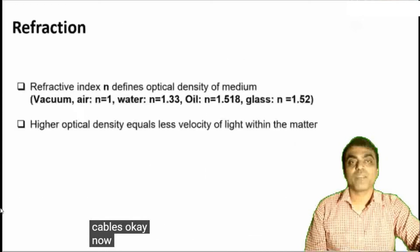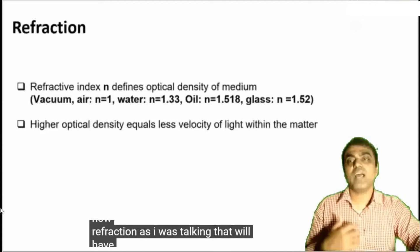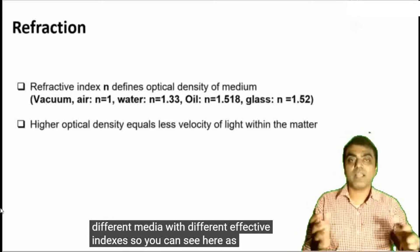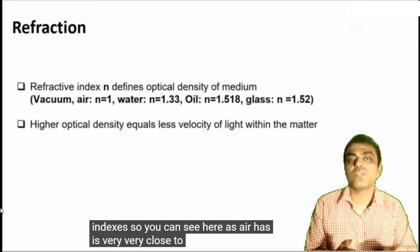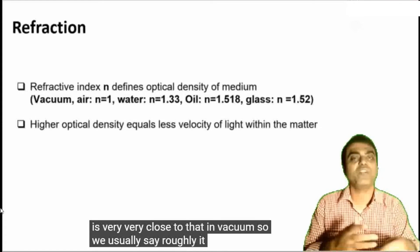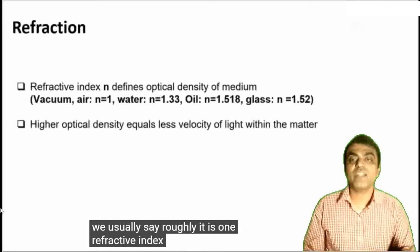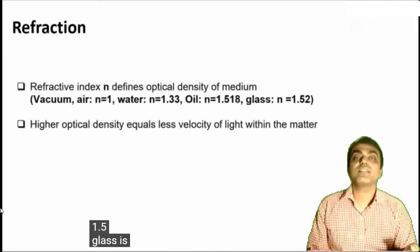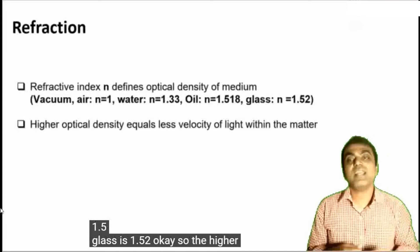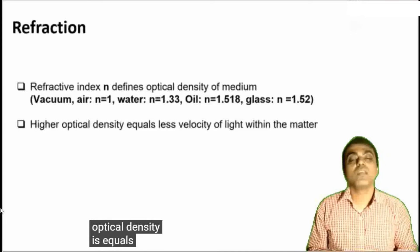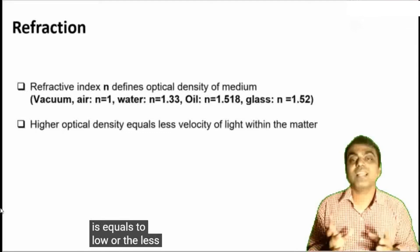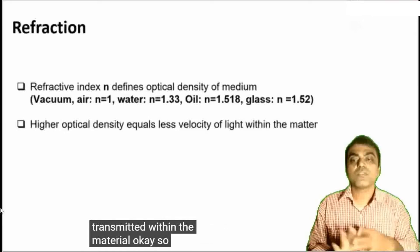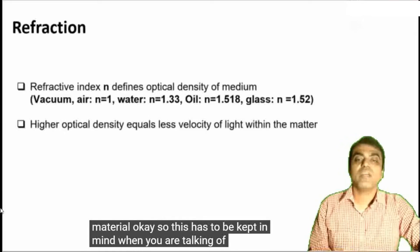Refraction involves different media with different refractive indices. Air is very close to vacuum, so we roughly say its refractive index is 1. Water is 1.33, oil is 1.5, and glass is 1.52. The higher the optical density, the lower the speed of light transmitted within the material — this has to be kept in mind when talking of refraction.